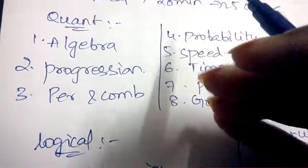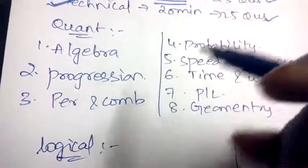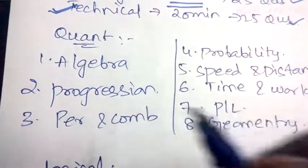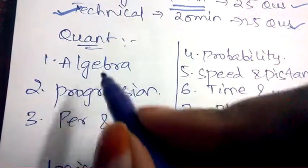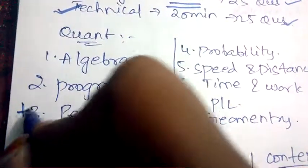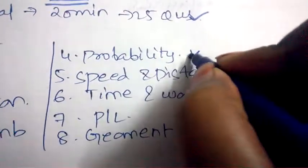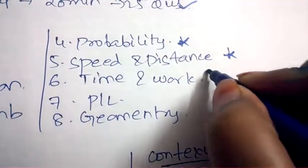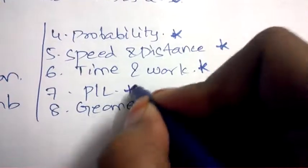Coming to quantitative aptitude, the questions will be asked on algebra, progression, permutation and combination, probability, speed time and distance, time and work, profit and loss, and geometry.